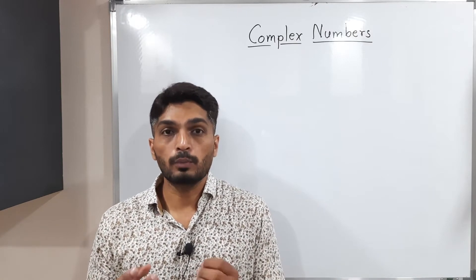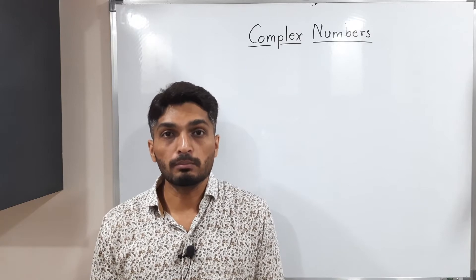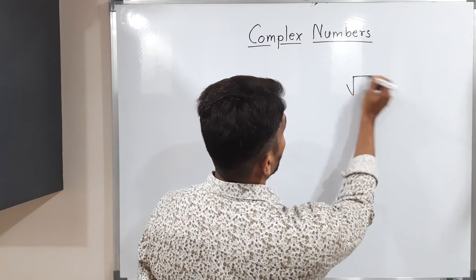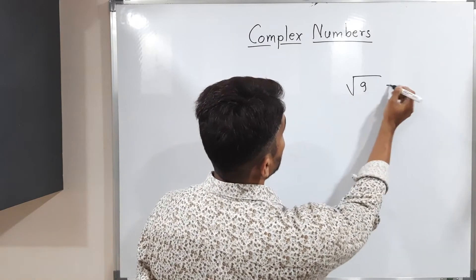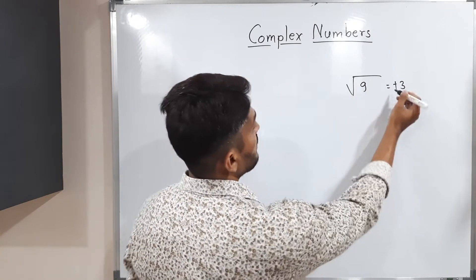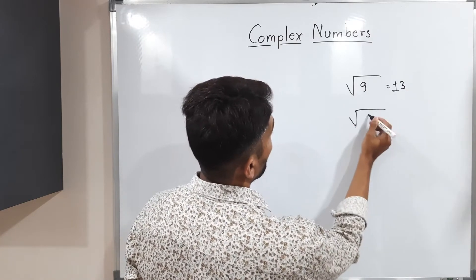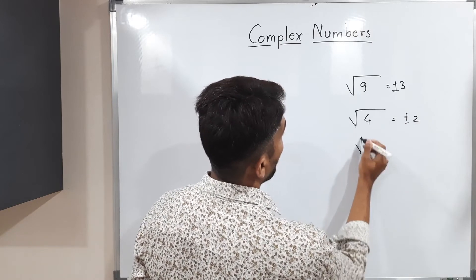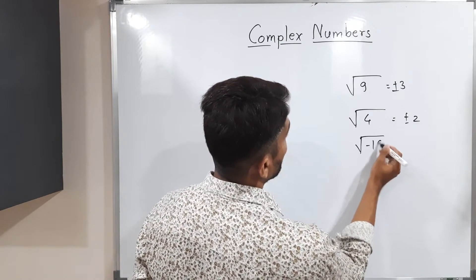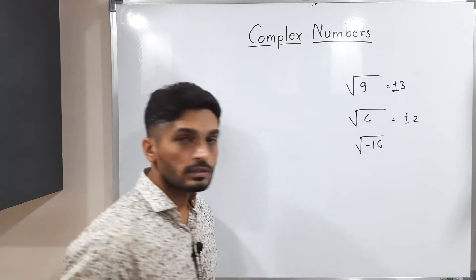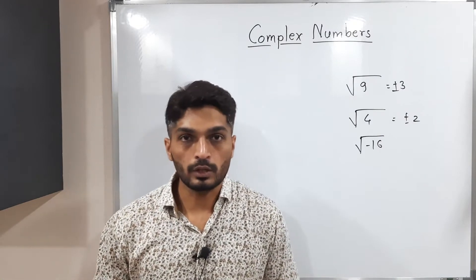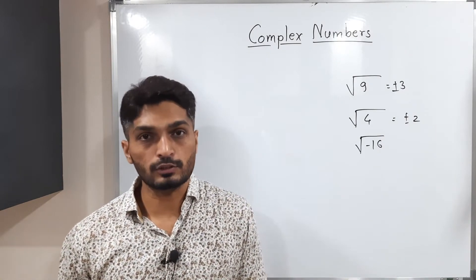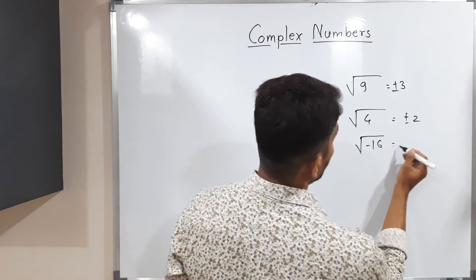If you have any positive number you can easily find its square root. For example, square root of 9 is plus or minus 3, and square root of 4 is plus or minus 2. But if you have any negative number, it is difficult to find its square root. With the help of complex numbers you can easily find it.